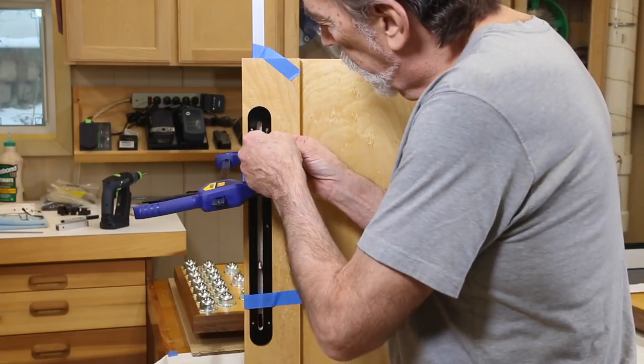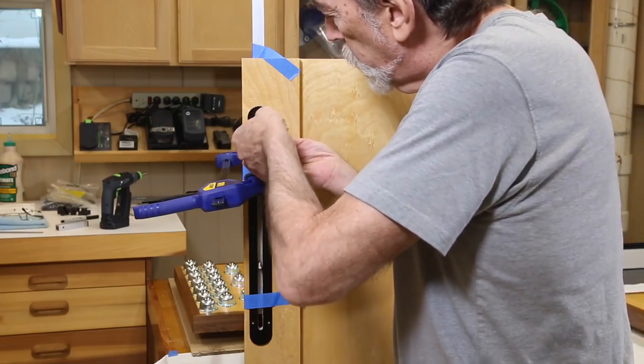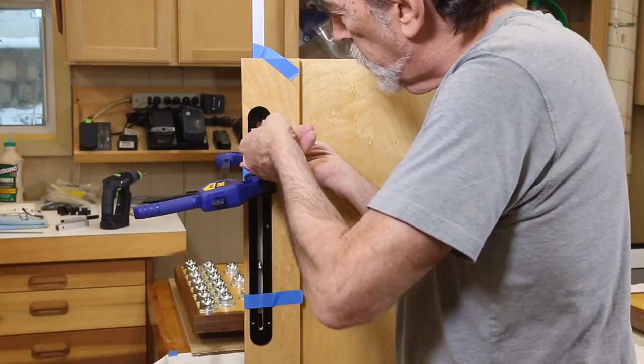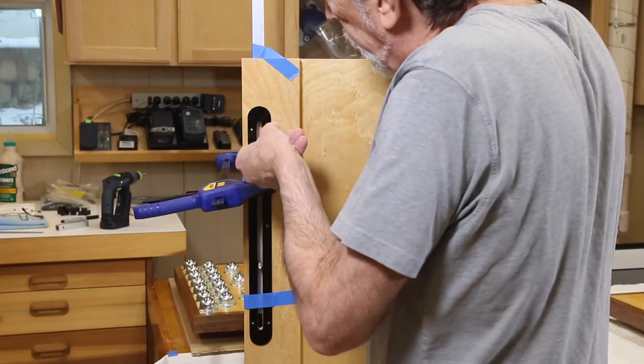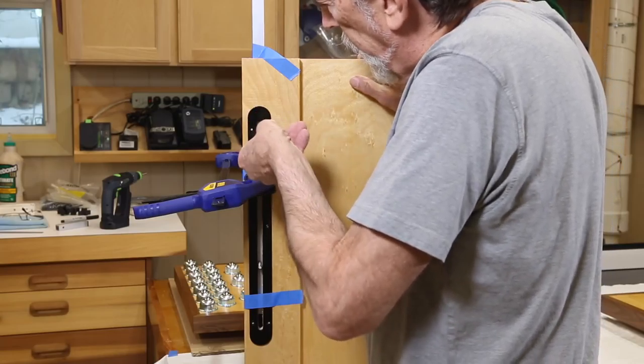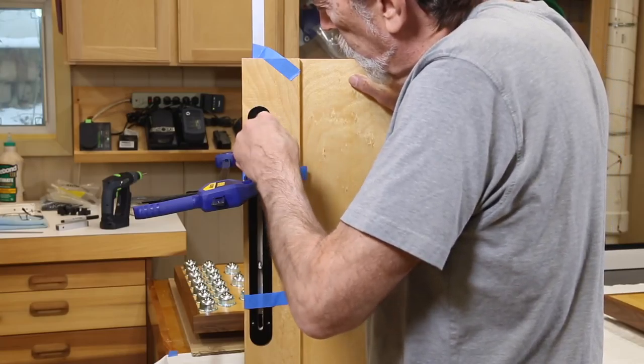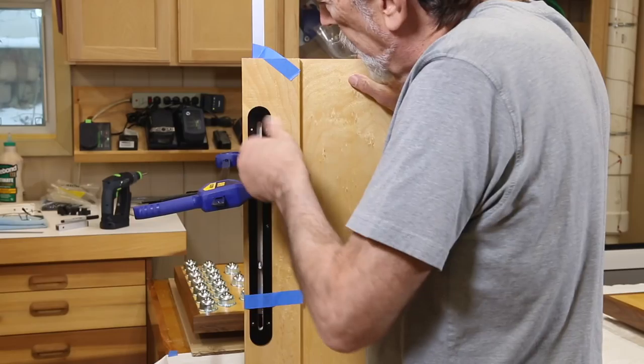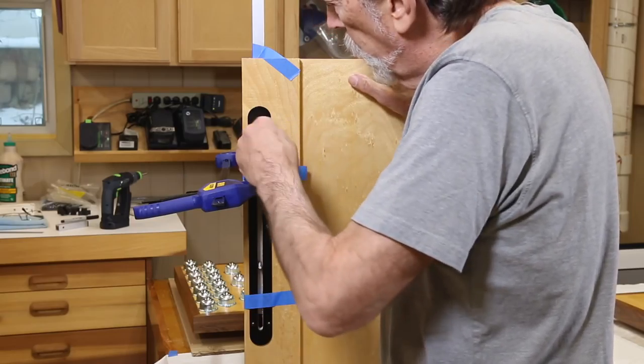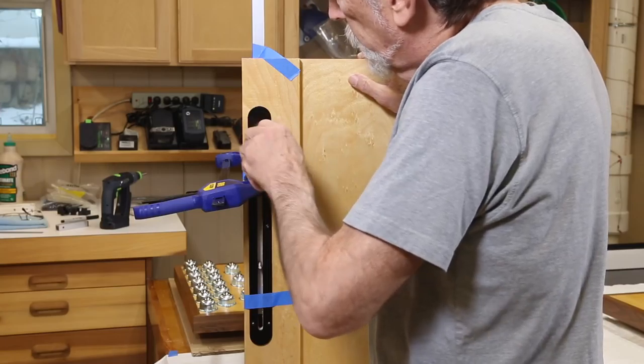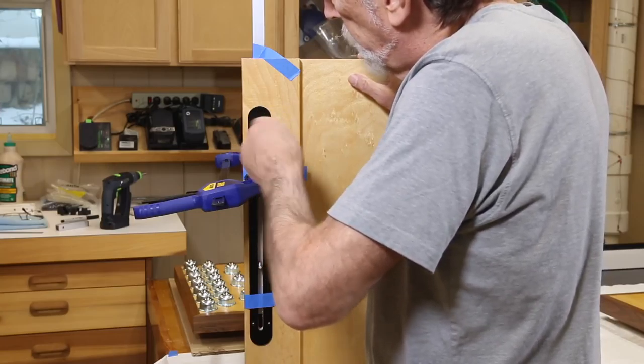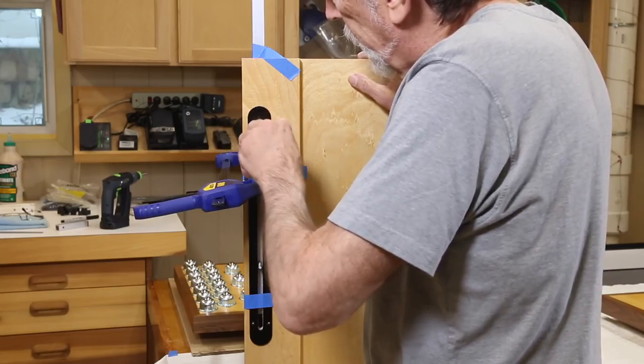If you don't have these, you should definitely get some. These are called auger gimlets. When you've got a screw hole where you really want to make sure that you get the placement just perfect, there's just nothing quite like doing this by hand.